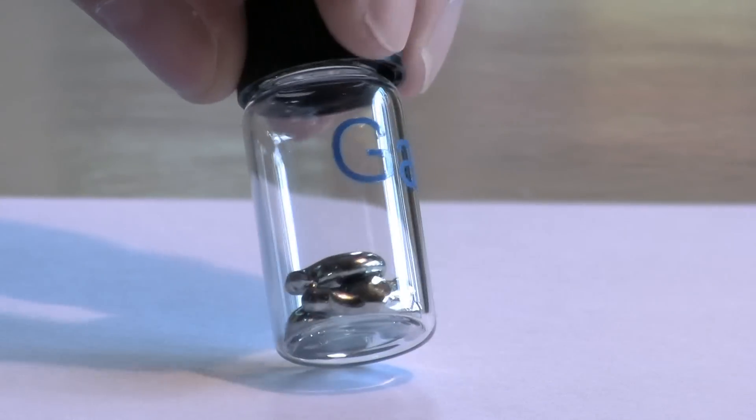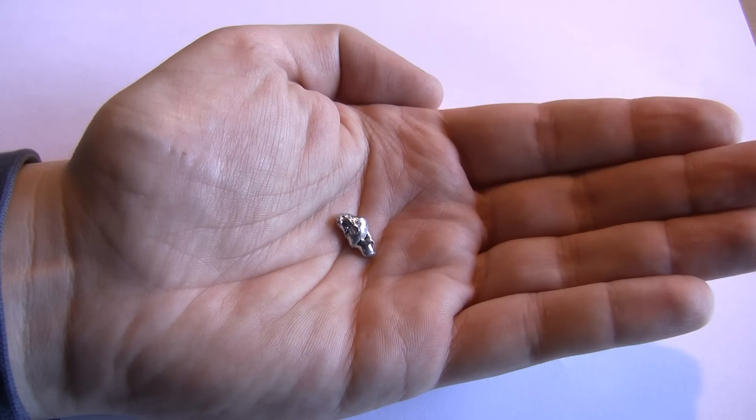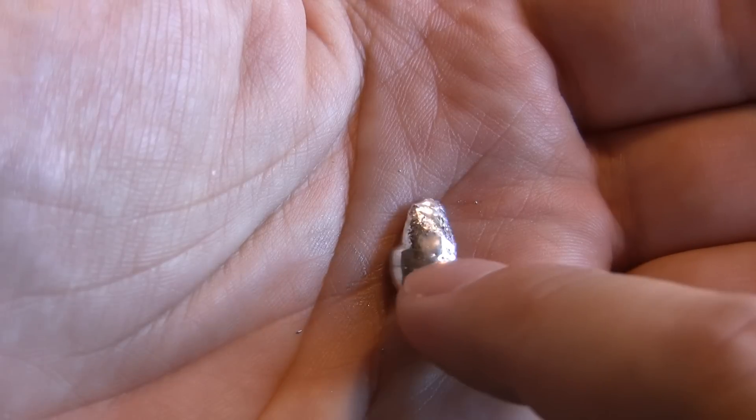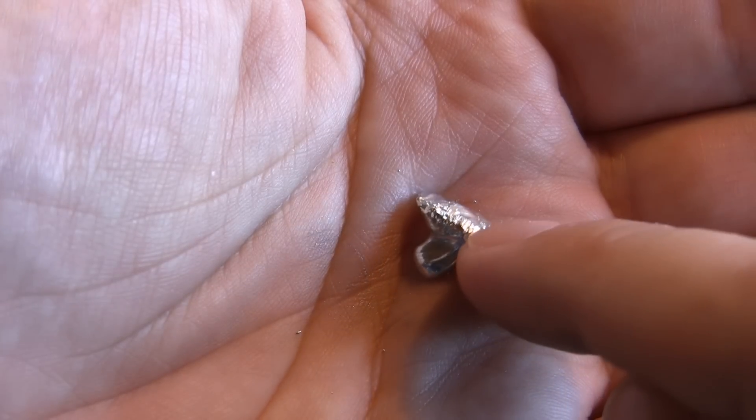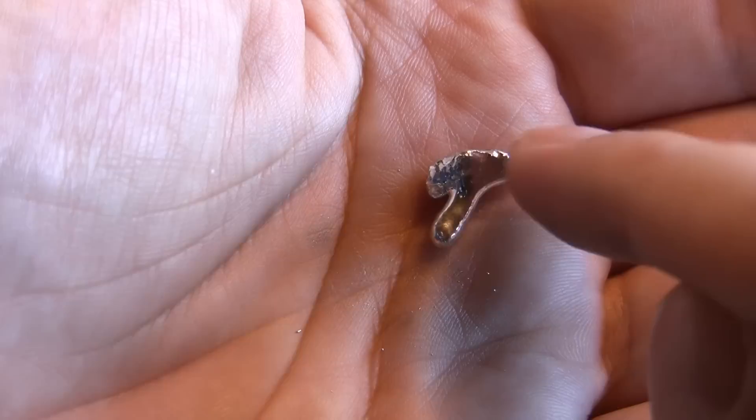This is gallium. A metal most famous for its low melting point. This will melt in your hand although on a cold winter day it takes a little patience. But you can see that some of it is melted.